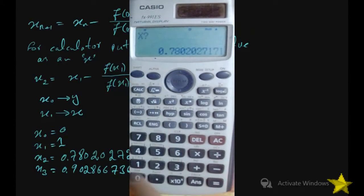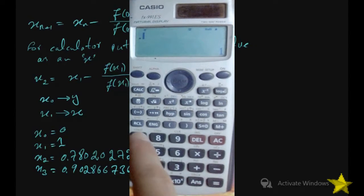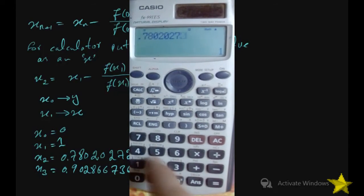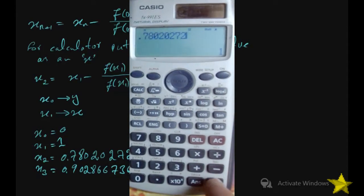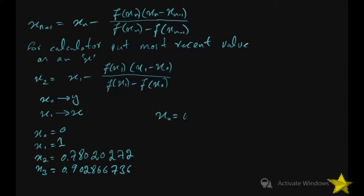To find x4, press calc, enter x3 which is stored as Ans, and x2 in the place of y: 0.78020272. We get x4 equal to 0.91062354.